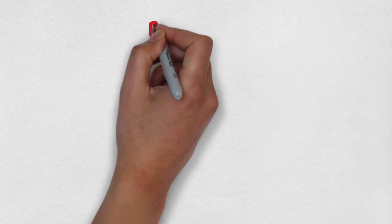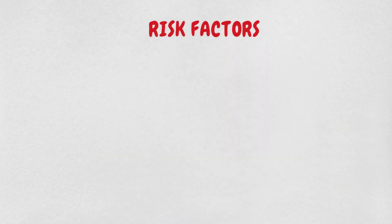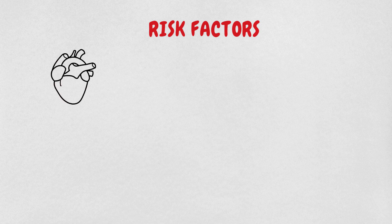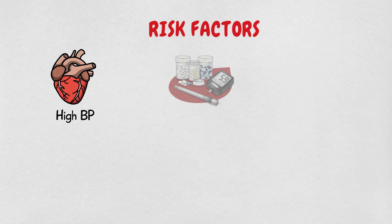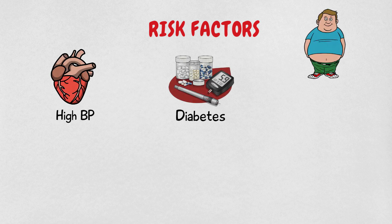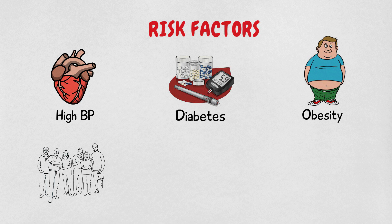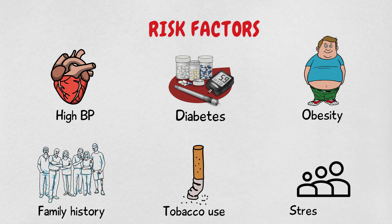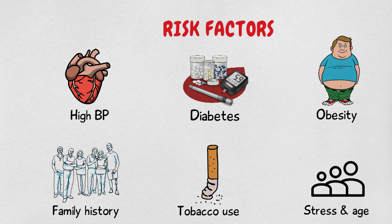There are many risk factors associated with angina, which include high blood pressure, diabetes, obesity, family history, tobacco use, stress, and age. Let's now see how angina pectoris is diagnosed and evaluated. In order to diagnose the cause of angina, the following tests may be performed.